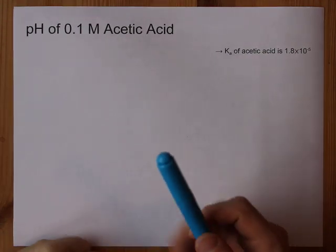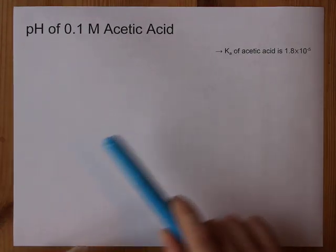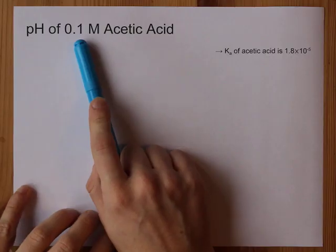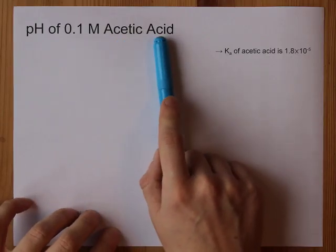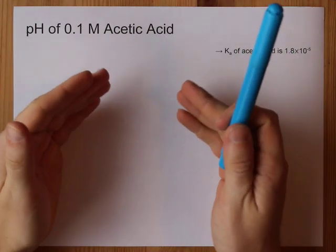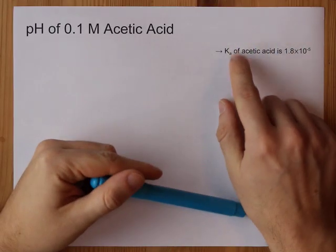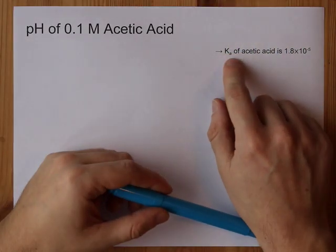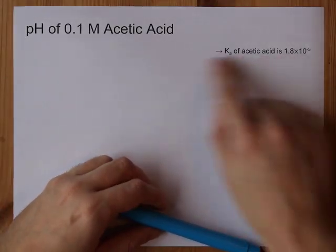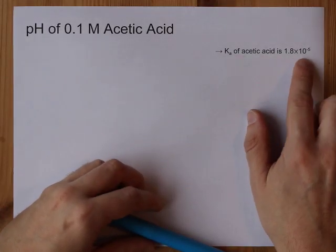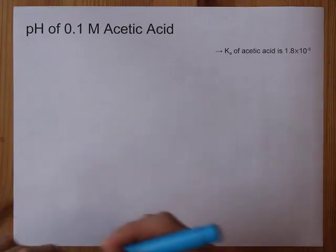Hello fellow students! Today we're going to be calculating the pH of 0.1 mol per liter acetic acid, which is a weak acid. To calculate its pH you have to be given a constant called Ka, the acid dissociation constant. For this acid, it's 1.8 times 10 to the negative 5.